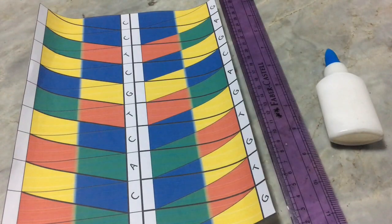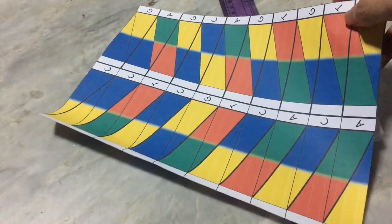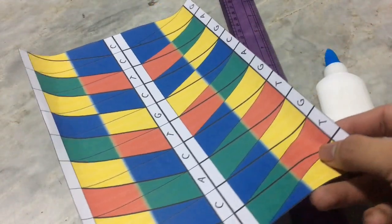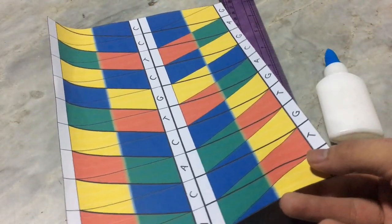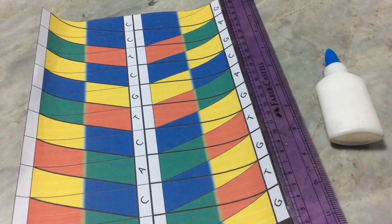We are going to make an origami DNA structure. To find this picture for the structure, just click the link below and print. So what's the first step?